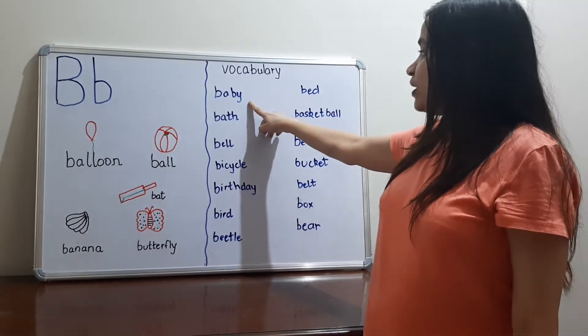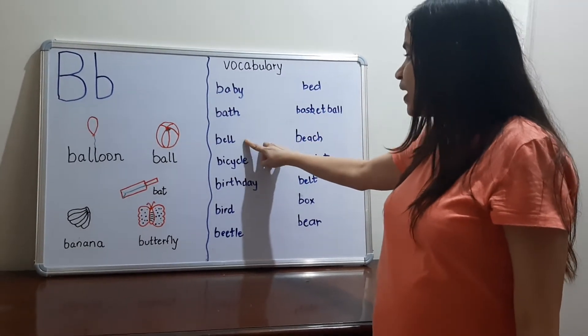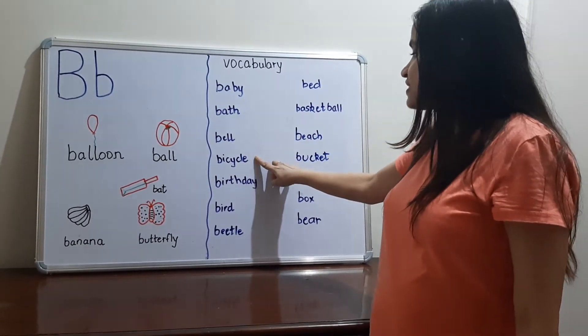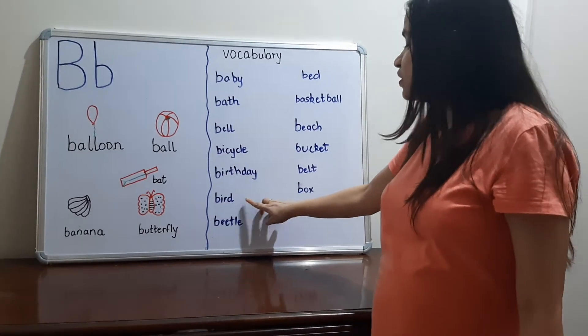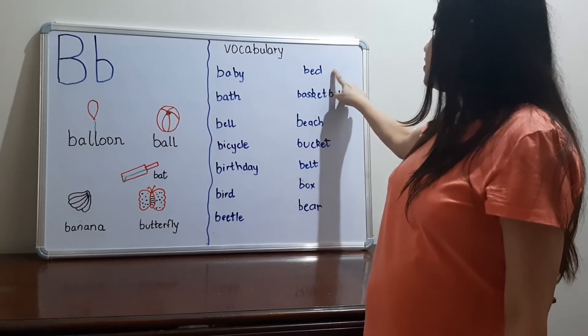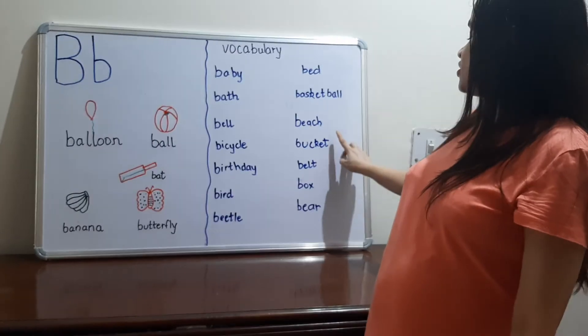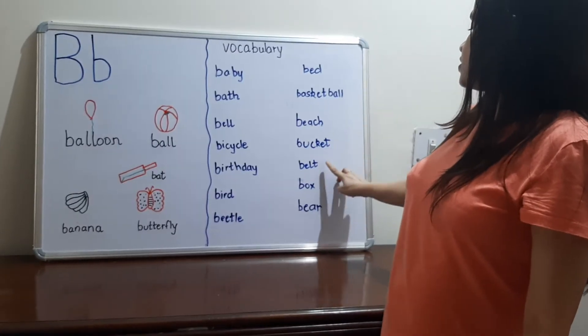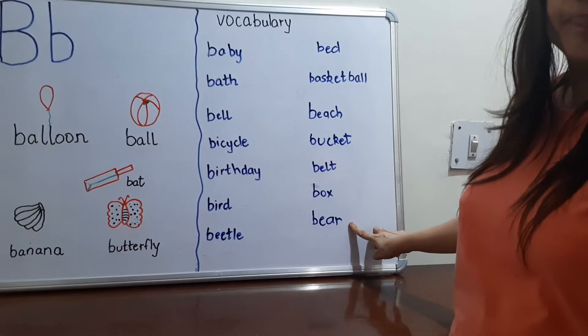More vocabulary for letter B includes: baby, bath, bell, bicycle, birthday, bird, beetle, bed, basketball, beach, bucket, belt, box, and bear.